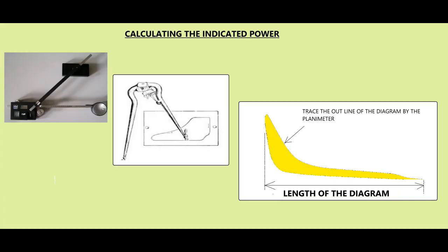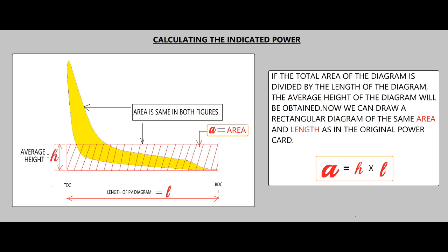Once we have the power card, the area must be measured. This can be done by using the mid-ordinate rule or by using an instrument called a planimeter. Once the outline of the power card is traced by the planimeter, the area can be read off to scale. The length of the diagram must also be measured. If the total area of the diagram is divided by the length of the diagram, the average height of the diagram will be obtained, and we can draw a rectangular diagram of the same area and length as the original power card.